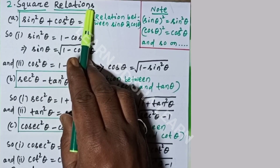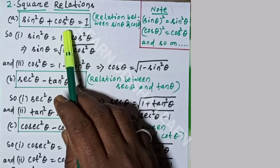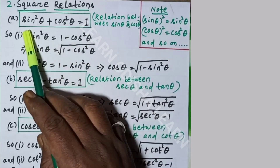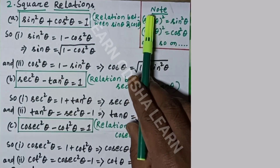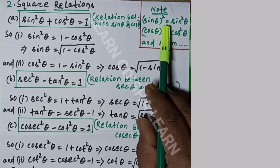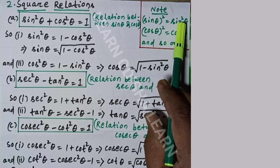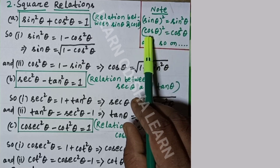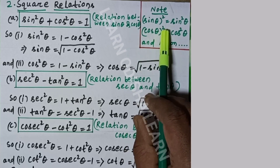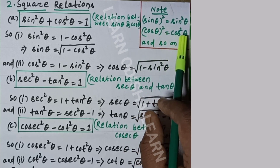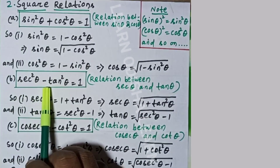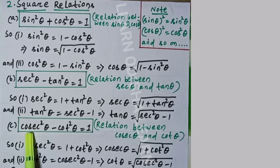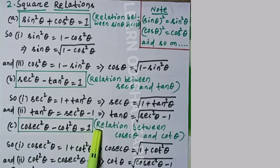Now, square relations. There are three square relations. The first is sin²θ + cos²θ = 1. Note that the whole square of sin theta is written as sin²θ, and the whole square of cos theta is written as cos²θ. The second is sec²θ − tan²θ = 1. The third is cosec²θ − cot²θ = 1.